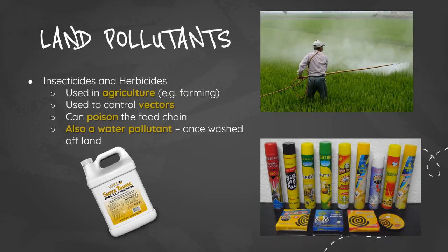Land pollutants are substances found on land that are harmful to the environment. Insecticides and herbicides are used in agriculture and to control vectors. They can poison the food chain through bioaccumulation.